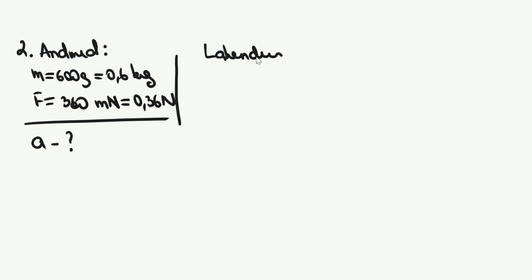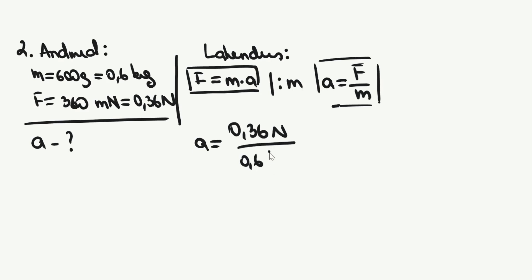Jällegi kirjutame välja andmed ning teisendame kõik väärtused SI-süsteemi ühikutesse. Selleks jagame 600 grammi tuhandega ning jagame 360 milliNewtonit samuti tuhandega. Seekord küsitakse meilt kiirendust. Kasutame Newtoni teise seaduse valemit F võrdub M korda A, et avaldada sealt kiirendus A. Selleks jagame võrrendi mõlemad pooled massiga läbi ning saame, et A võrdub F jagatud M-iga. Asendame andmed valemisse ning arvutame. Saame vastuse, et kiirendus mille jõud kehale andis oli 0,6 meetrit sekund ruudus.